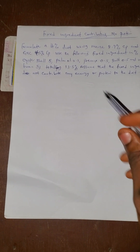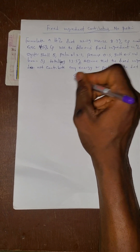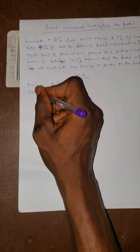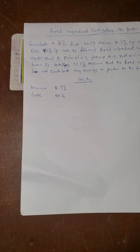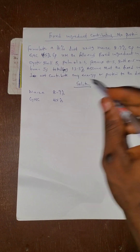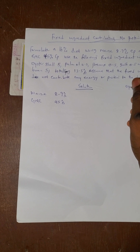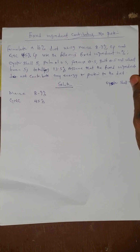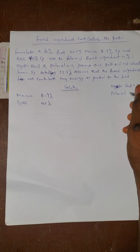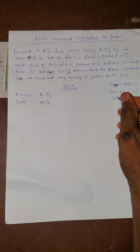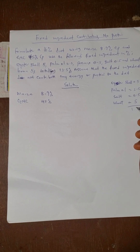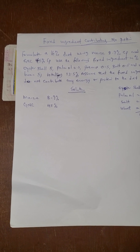Now let us see a question. The question says: formulate a 16% diet using Maize. The Maize is 8.9% CP, and GNC we are giving to be 45%. Now we are using the following fixed ingredients: the oyster shell is 5, palm oil is 2.5, salt is 0.5, wheat is 5. Now the total is 13.5.